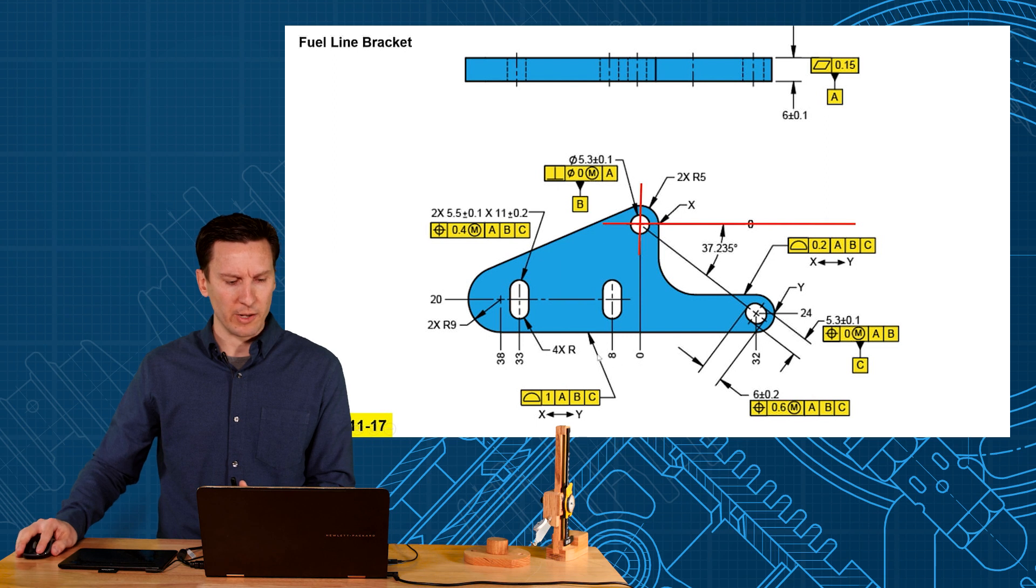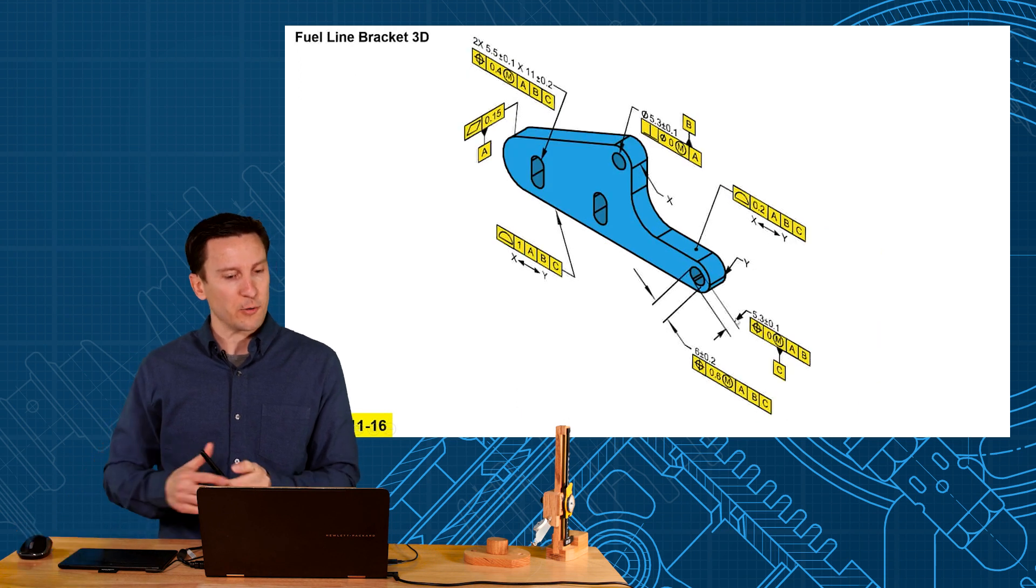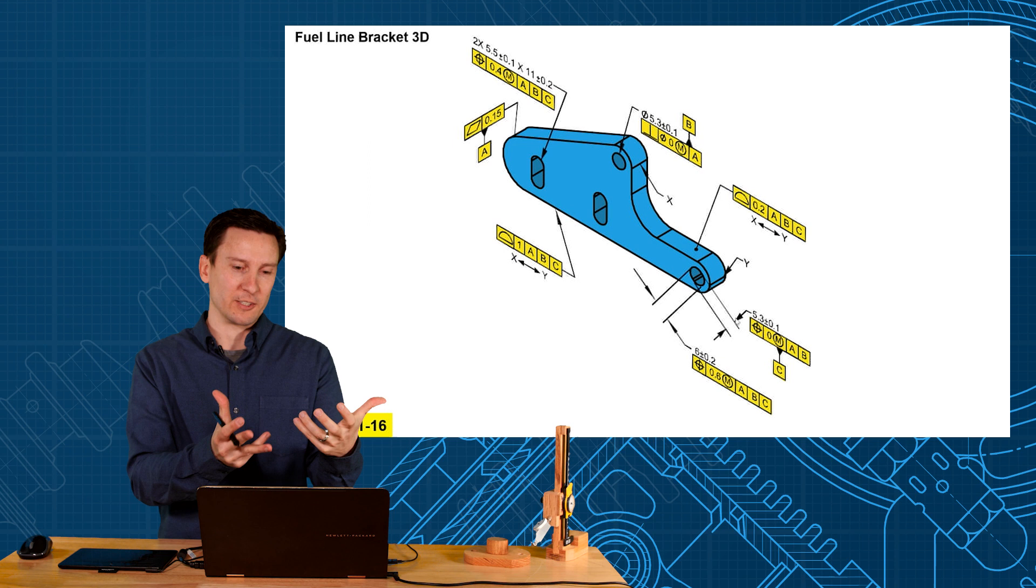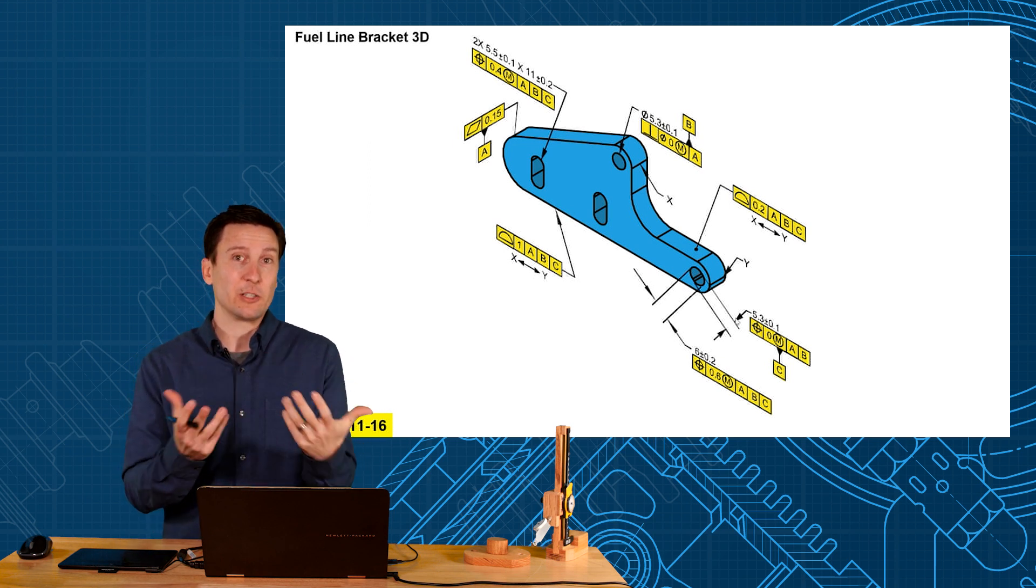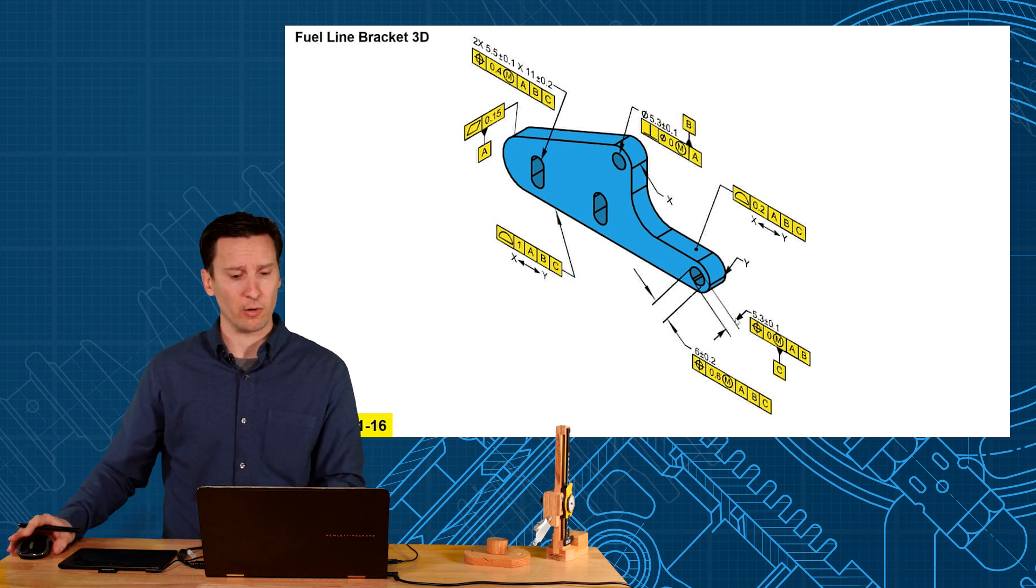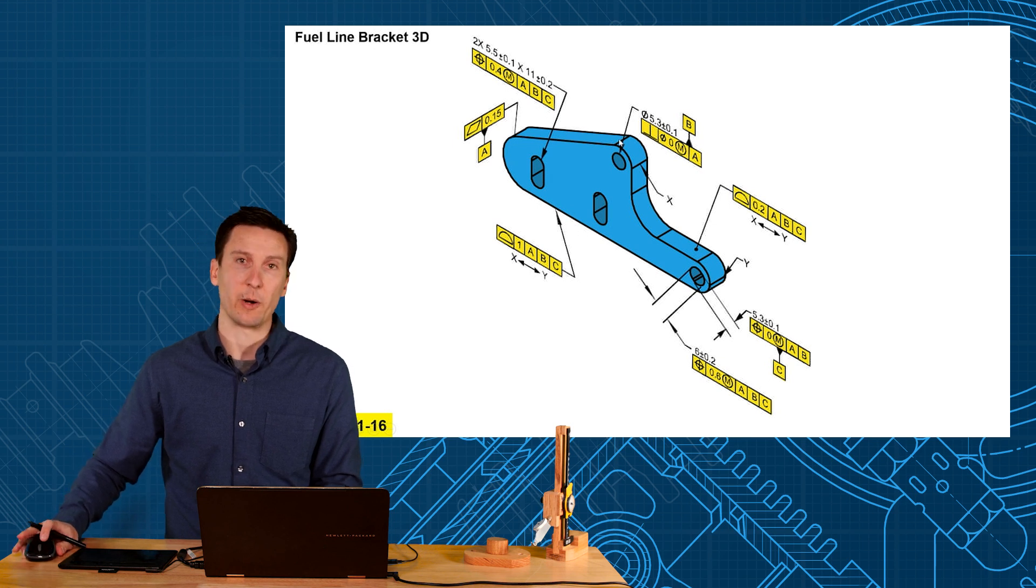Now right now look how we're dimensioning everything and we have some problems with these dimensions because of the offset and things like that. Another approach is to use model-based definition. Let the CAD model be the basic dimensions. So dimensions don't matter. They're all just the theoretical basic defining true position and true profile. So now it's more direct. You profile within 0.2 and it directly correlates to this set of surfaces. And a profile of 1 mm would directly associate to these surfaces all the way around like this.